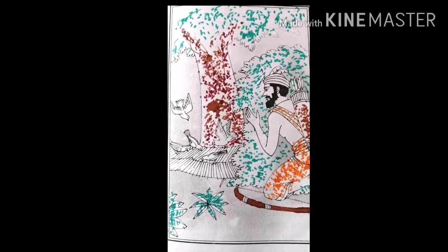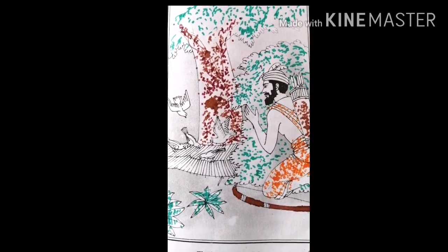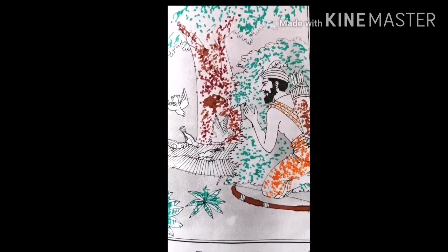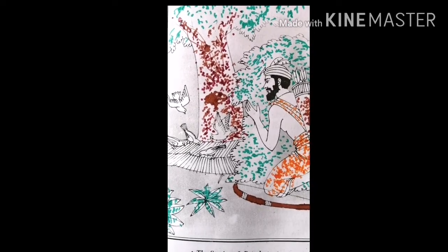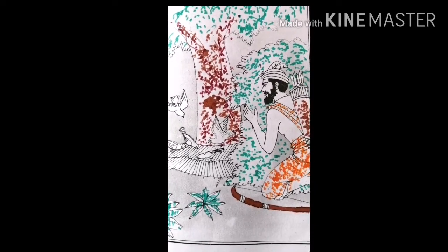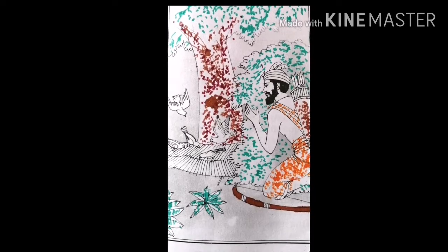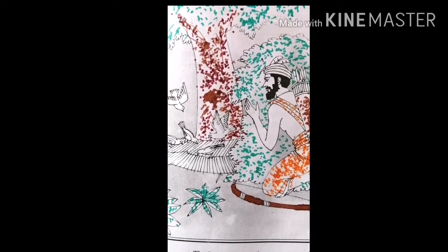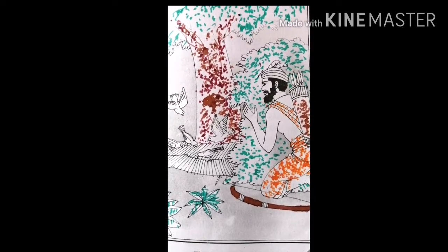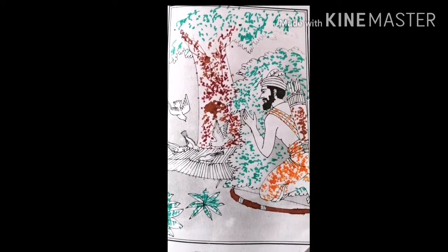Hiranyaka felt glad on seeing his friend. But after knowing that Chitragreeva, along with other doves, were trapped in the net, he asked them what happened to all of you. Chitragreeva narrated their story.